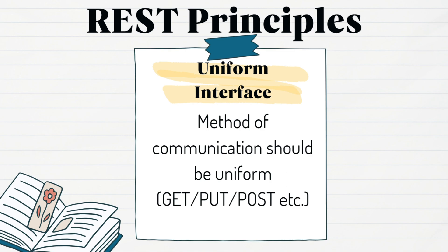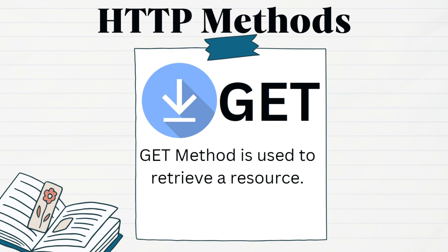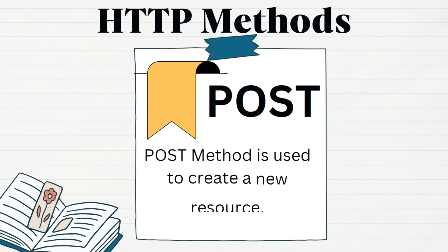HTTP stands for Hypertext Transfer Protocol. Under this protocol, we have different types of methods which are used for different operations. The GET method is used to retrieve a resource from a server — whenever we want to get some data from the server via REST API, we use a GET request. The POST method is used to create a new resource at the server. For example, when we register on a website, we fill in all the details and when we click the register button, it sends a POST request along with the filled data to the server, and using that, a new user is created on the server side.